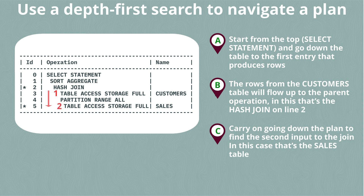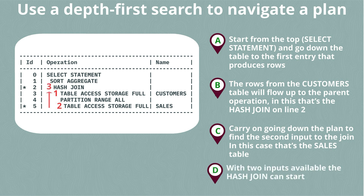We find the second input on line five of the plan, which is the table scan of sales. Rows from this scan will flow into the hash join on line two, and the results of that join will flow up the plan to the sort aggregation on line one of the plan, the results of which will then be returned to the end user.